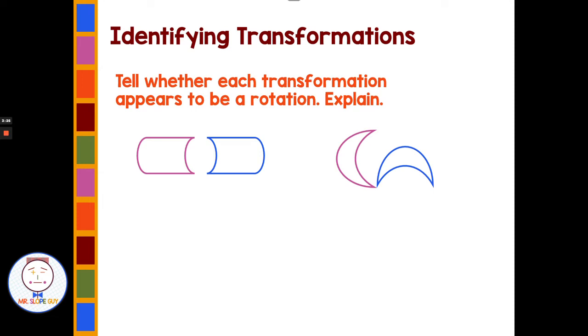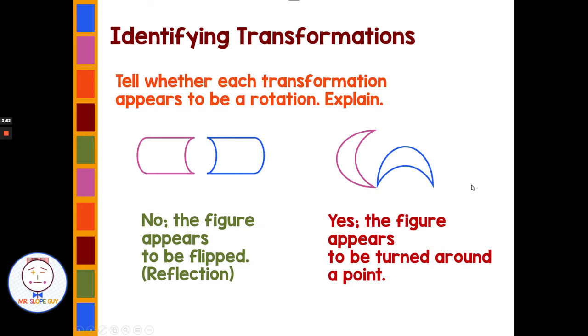Identify the transformations. Tell whether each transformation appears to be a rotation and explain. Let's look at this one on the left. From pink to blue or blue to pink, this one does not look like a rotation. This appears just to be a flip or a reflection over some line of reflection drawn here in the center. This one from pink to blue looks to be turning around this specific point here. This is an example of a rotation.